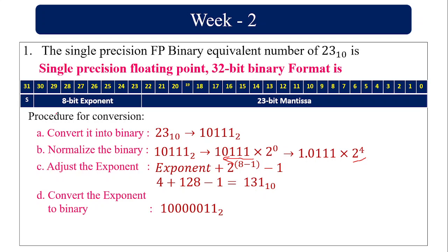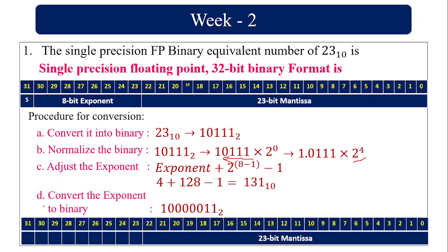First we find the sign and then the exponent part. Since the number is positive, the sign bit is 0; if negative, the sign bit would be 1. The exponent part in binary is 1, 0, 0, 0, 0, 0, 1, 1, 1. The remaining part is the 23-bit mantissa.